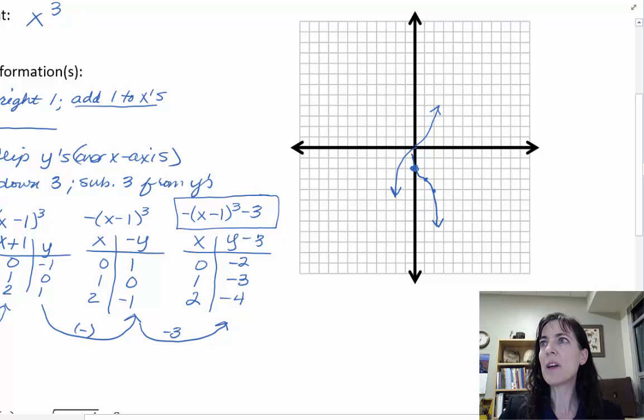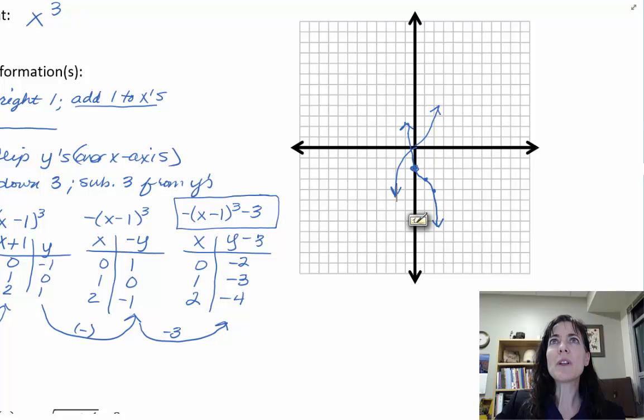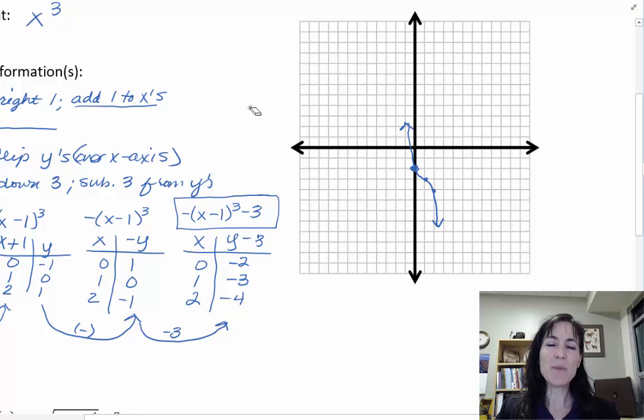So I can just then gauge something like that. And going up in the other direction. Try that one more time. Like so. And then I want to get rid of my parent function so I don't confuse matters at all. And there's my pretty much graph for the negative quantity, X minus one, quantity cubed minus three. So you can see that it has been flipped over. It has been moved to the right one because this should have been over here at the zero. So it's been moved to the right. And it's been moved down one, two, three spots. And it makes sense.